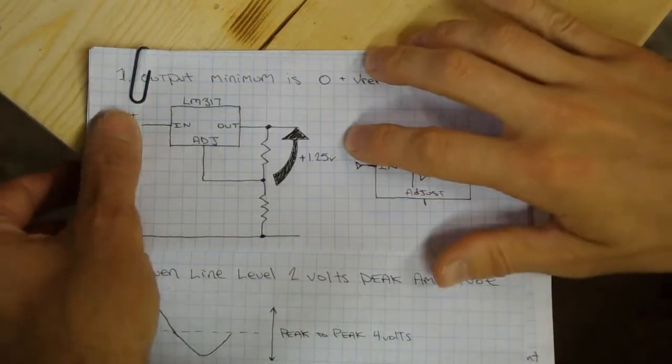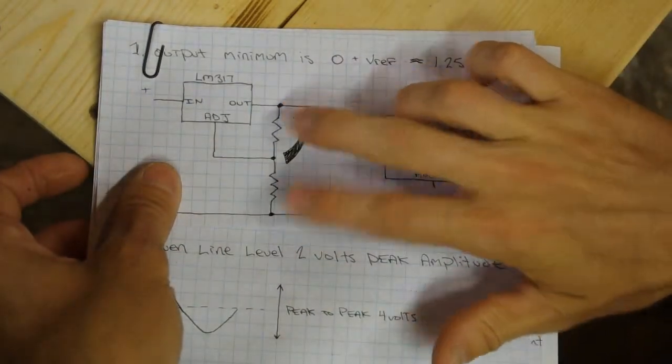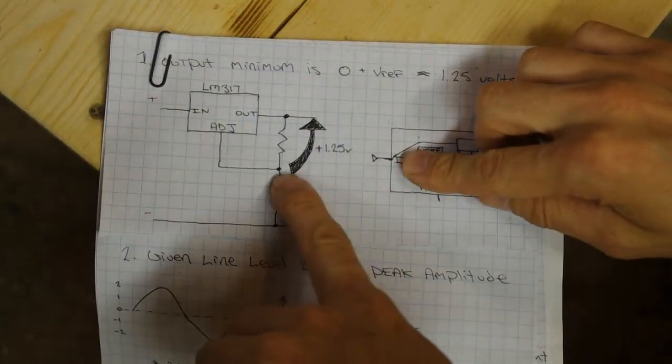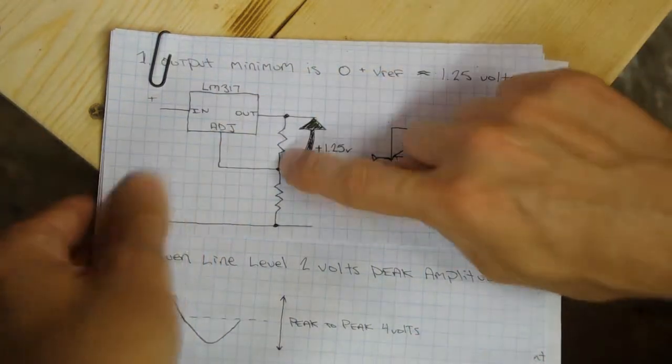Here's your LM317. This is how it would normally be used in a circuit. We're going to use it the same way too. These are your two resistors that form a divider network. Your adjust pin goes in between them. Output, resistor to adjust pin, resistor to ground.